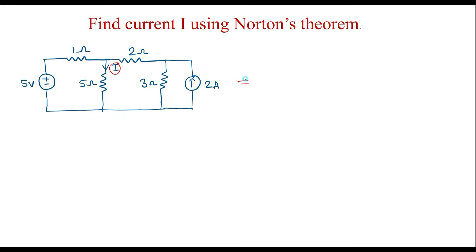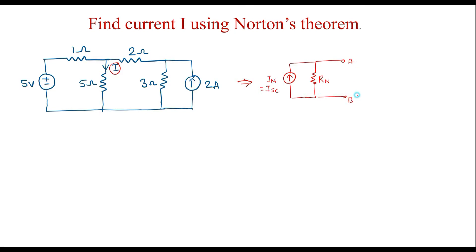First I will show the Norton's equivalent circuit. The Norton's equivalent circuit looks like this: there is a current source known as In, that is Norton's current, sometimes also known as short circuit current Isc. Parallel to this, there is a resistor known as Norton's resistor, represented as Rn. To these terminals, we connect the resistor in which we are finding current. First we will calculate In and Rn.